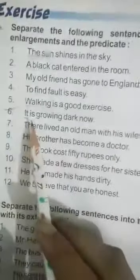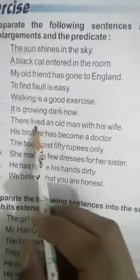So we had a homework question. Let's discuss quickly 6 to 12, right? So here I hope you can see it clearly, right? So it is growing dark now. So what is it here? It is our subject and here is a simple subject. There lived an old man with his wife.